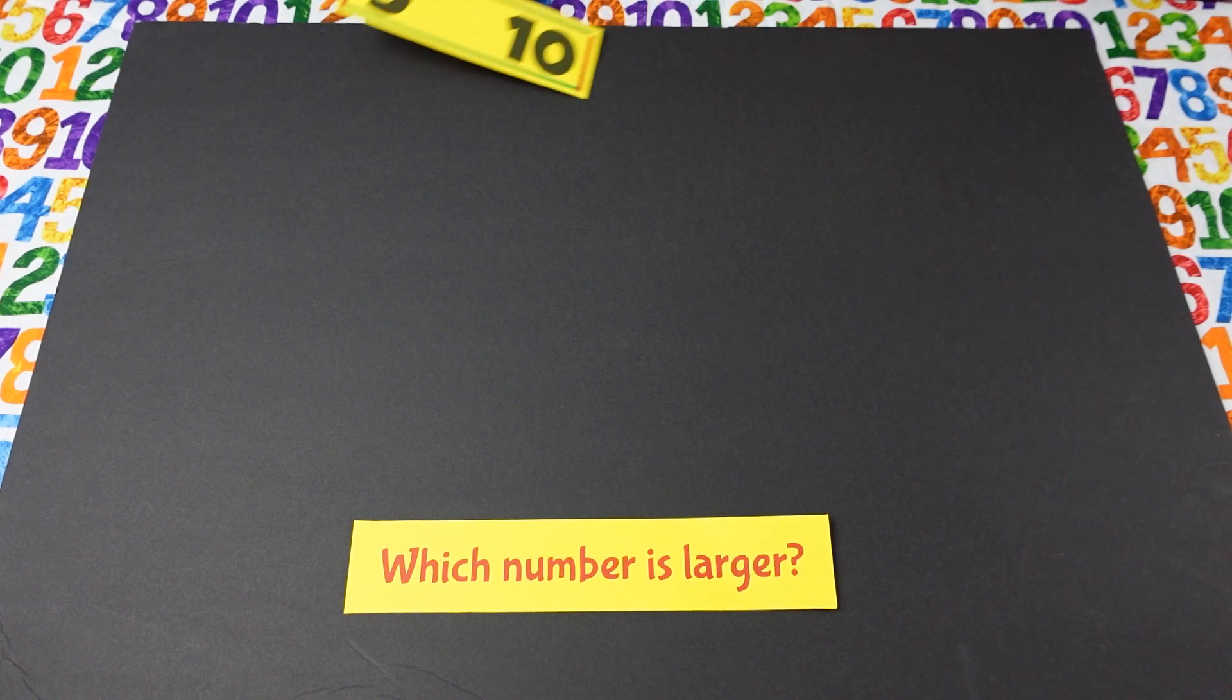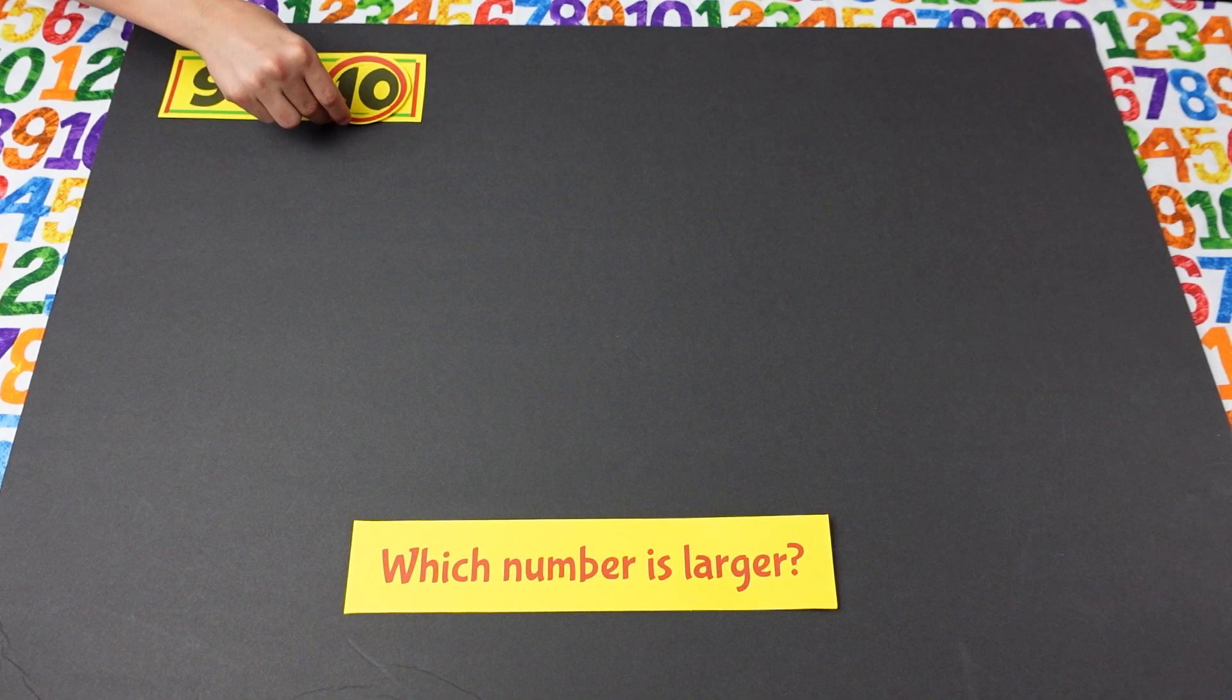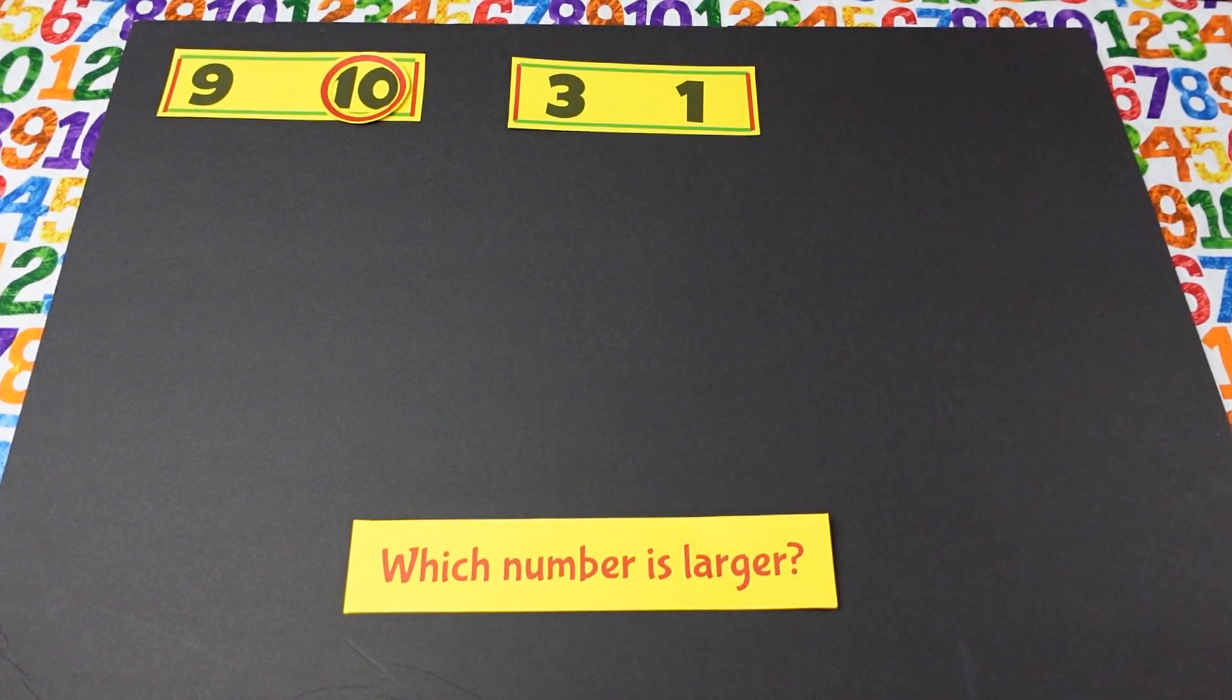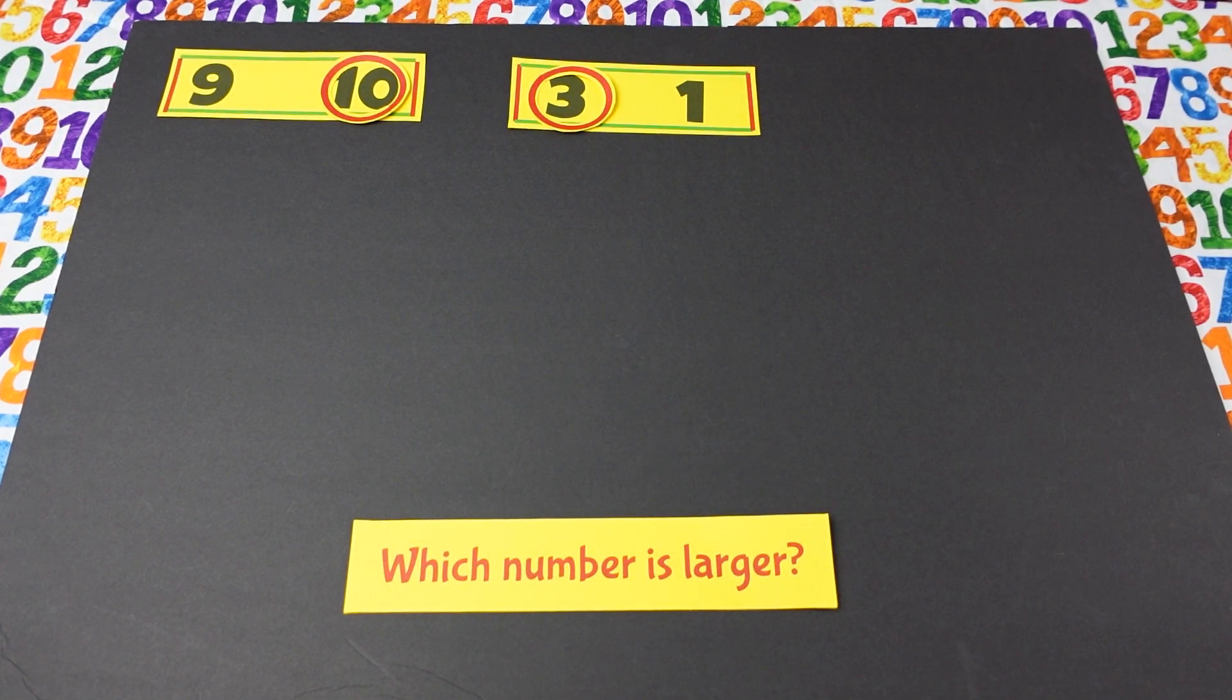All right, Isabella, which is larger? Nine or ten. Ten. You are right. Good job. Okay. And Jonathan, which number is larger on here? Three or one? Three. You are correct.